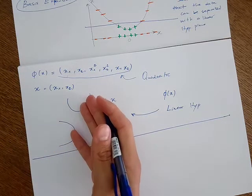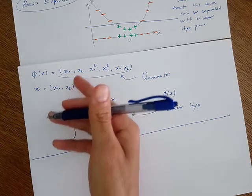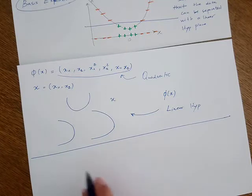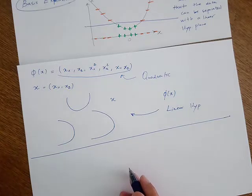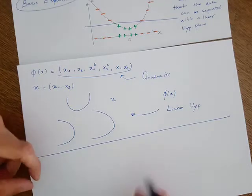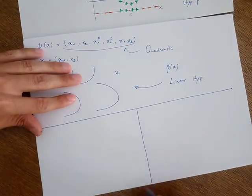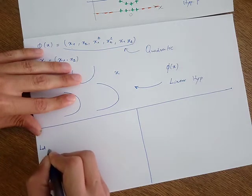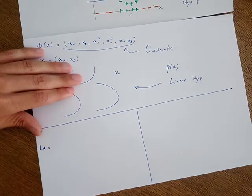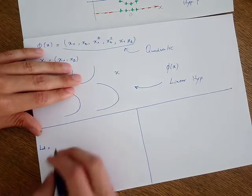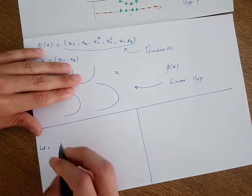Now, after transforming these features into a new feature space, what we do is apply either the hard support vector machine or the soft support vector machine. Just to make the explanation easier, let's consider applying the hard support vector machine. If you remember, in the hard support vector machine, this is the expression that we wanted to minimize for alpha_i, and minimizing this expression leads to training the model.